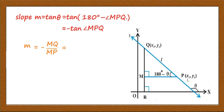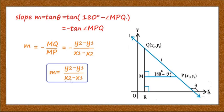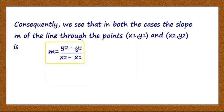Therefore, m = -(y2 - y1) / (x1 - x2) = (y2 - y1) / (x2 - x1). The slope of the line m = (y2 - y1) / (x2 - x1). In both cases, we get the same formula. You have to remember this formula: the slope of the line joining the points (x1, y1) and (x2, y2) is m = (y2 - y1) / (x2 - x1). This is the first formula to memorize from this chapter.